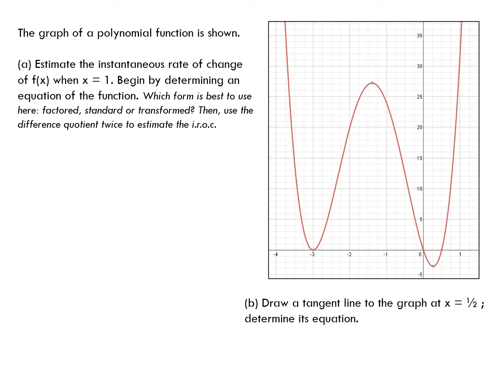The graph of a polynomial function is shown. Estimate the instantaneous rate of change of the function when x equals 1. Going back to the example we just did, if you have the tangent line, then you can get two points on the tangent line and get its slope — that will give you the instantaneous rate of change. We don't have any tangent lines drawn here. We're going to estimate the instantaneous rate of change when x equals 1. x equals 1 is here on the graph, and I want to know how my function is changing when x is 1.